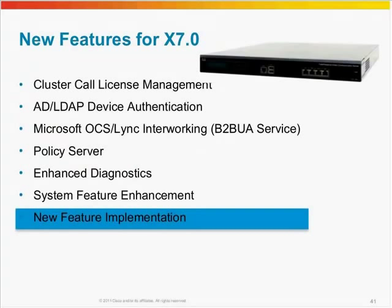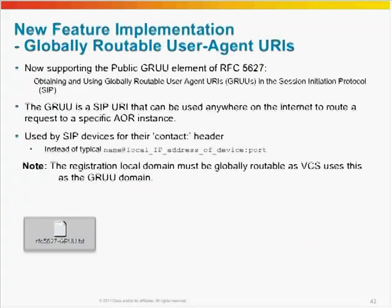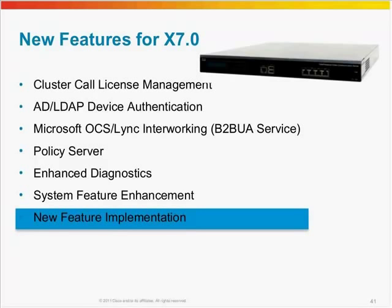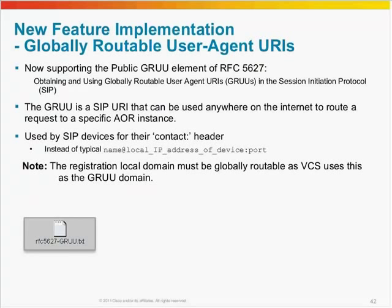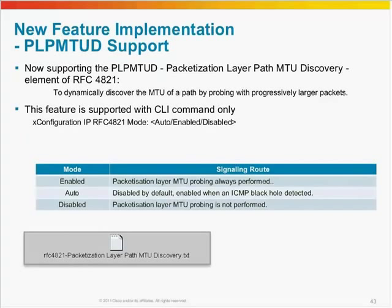For the last topic today — new feature implementations in X7. The VCS now supports publicly globally routable user agent URIs, or GRUUs. The GRUU is a URI that can be used anywhere on the internet to route a request to a specific address of record instance. We have also added the packetization layer path MTU discovery function to dynamically discover the MTU size. The VCS will dynamically discover the MTU of a path by probing with progressively larger packets until it fails, to determine the correct MTU size on the network. For now, the only way to enable this function is on the command line interface.